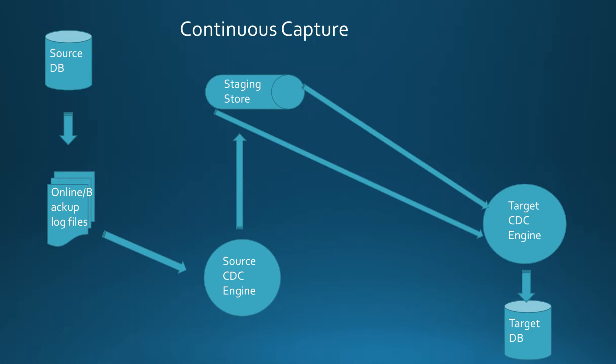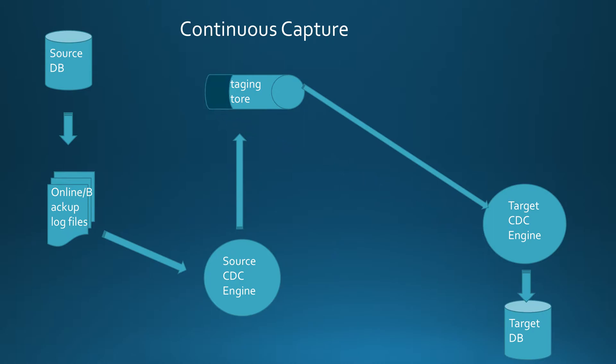The staging store entries are cleaned up as soon as a subscription no longer needs them. In large distribution environments, it is possible to have some target systems that are not synchronized with the source, or there could be an unstable network connection between the source and target.